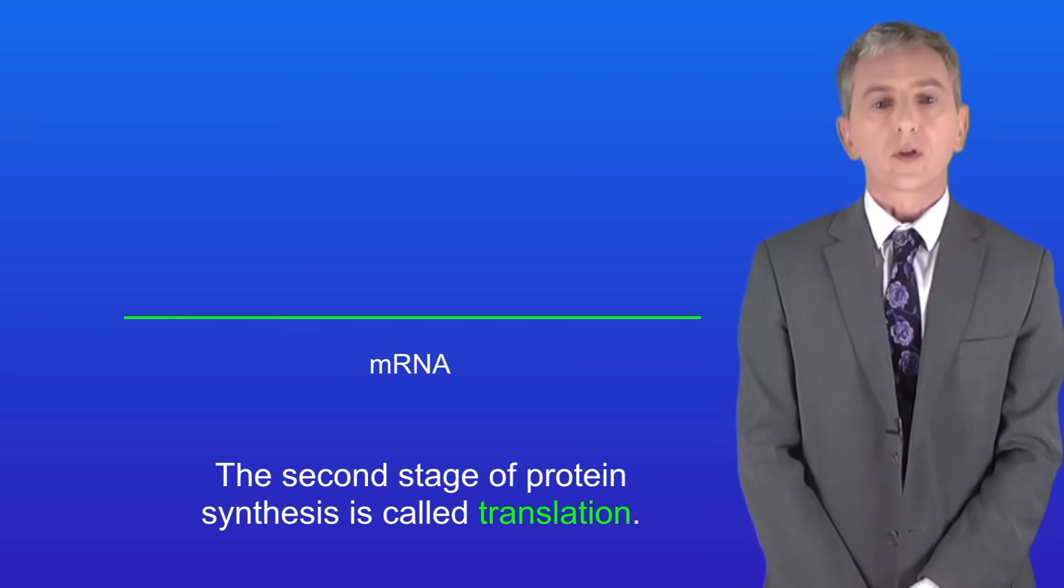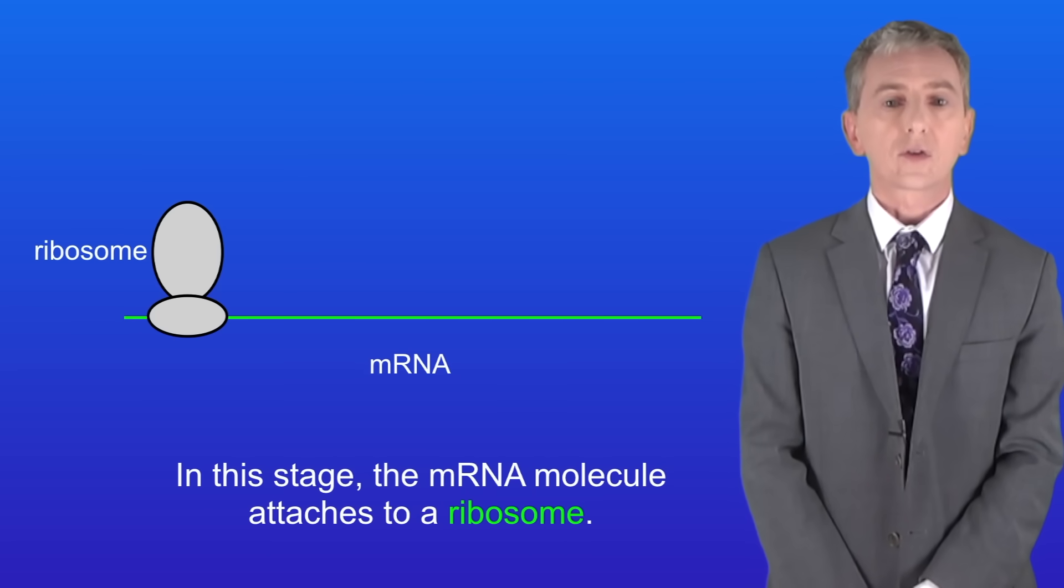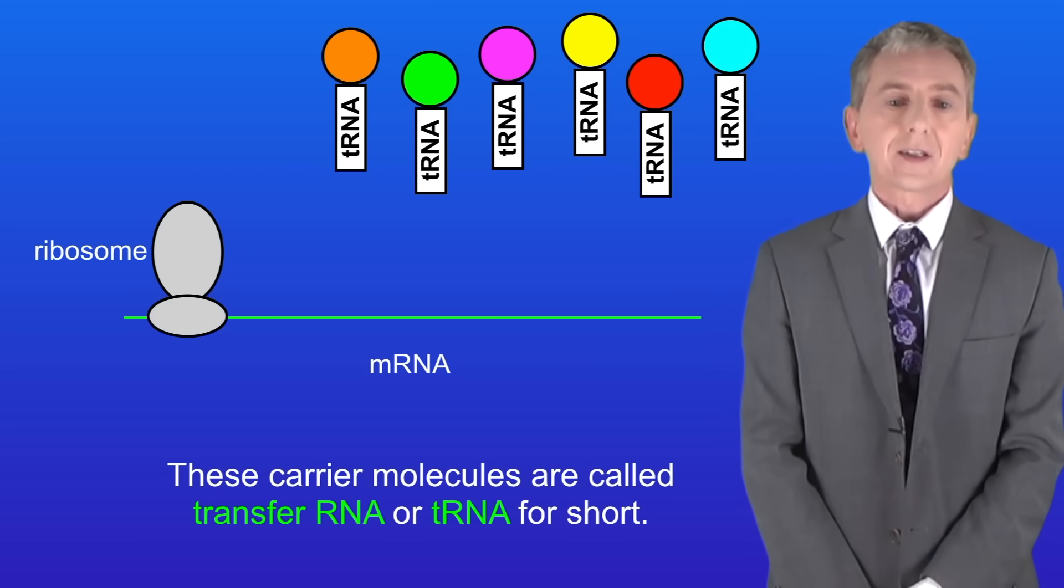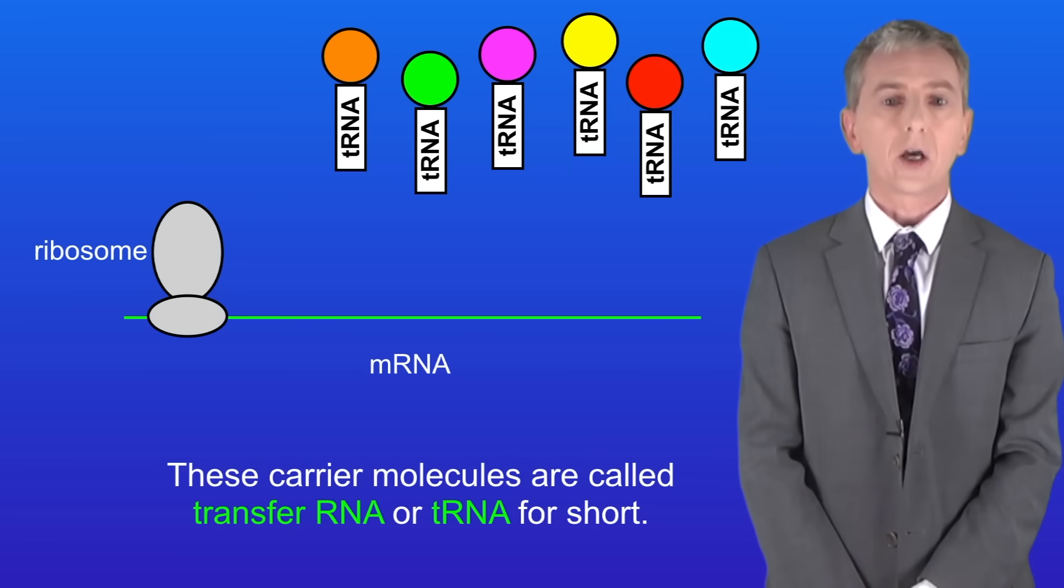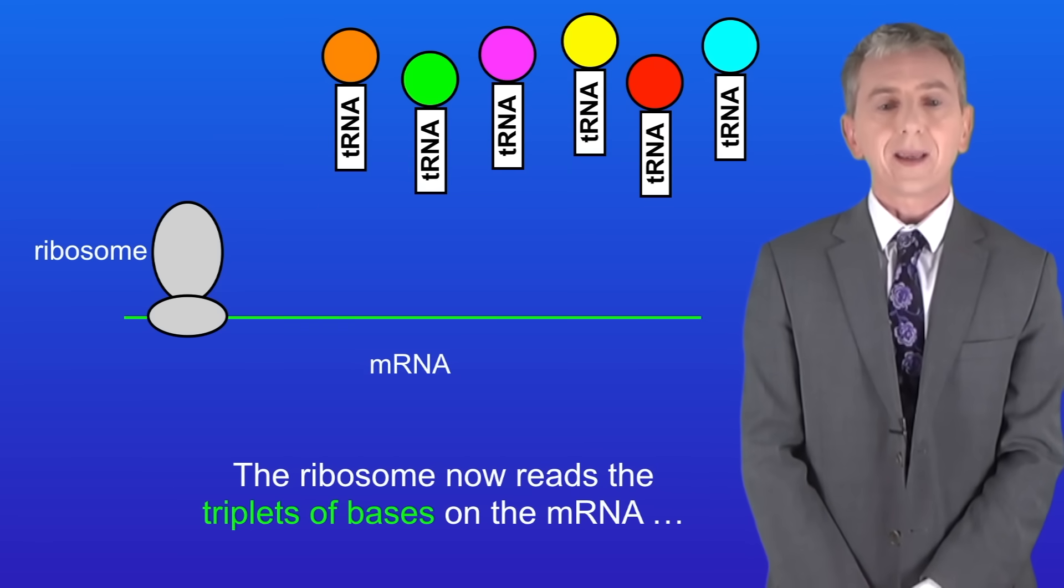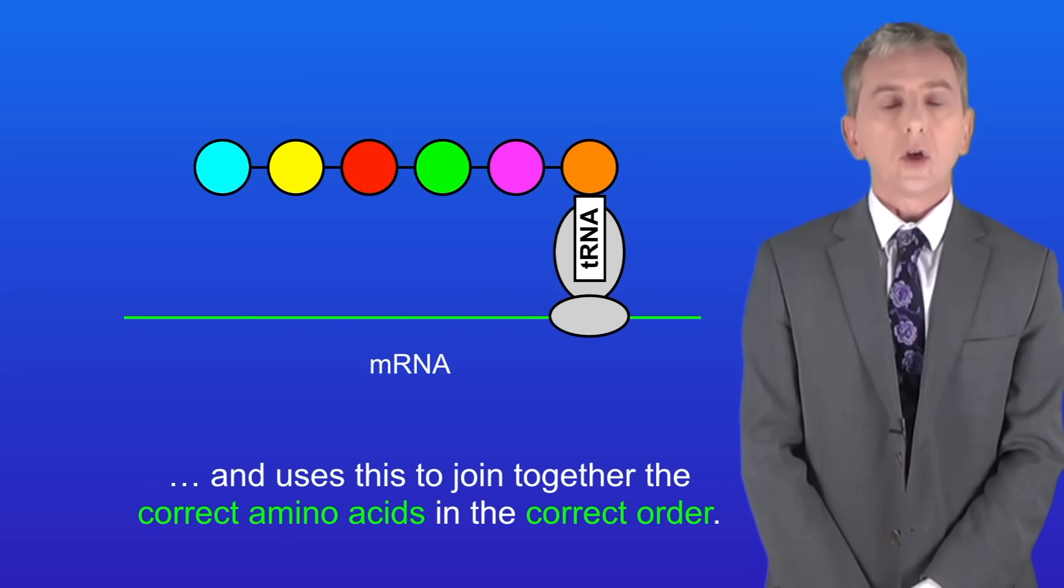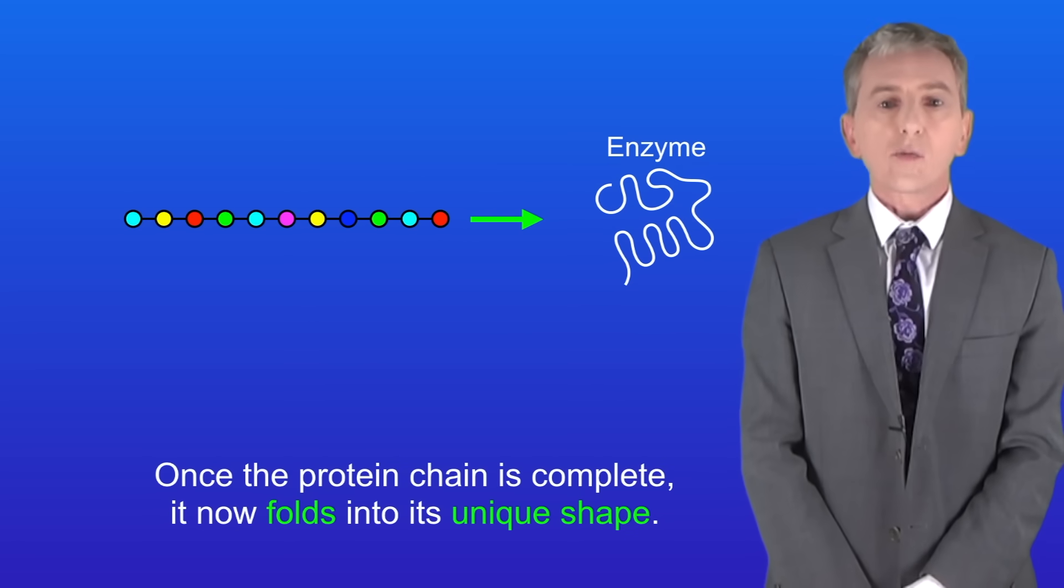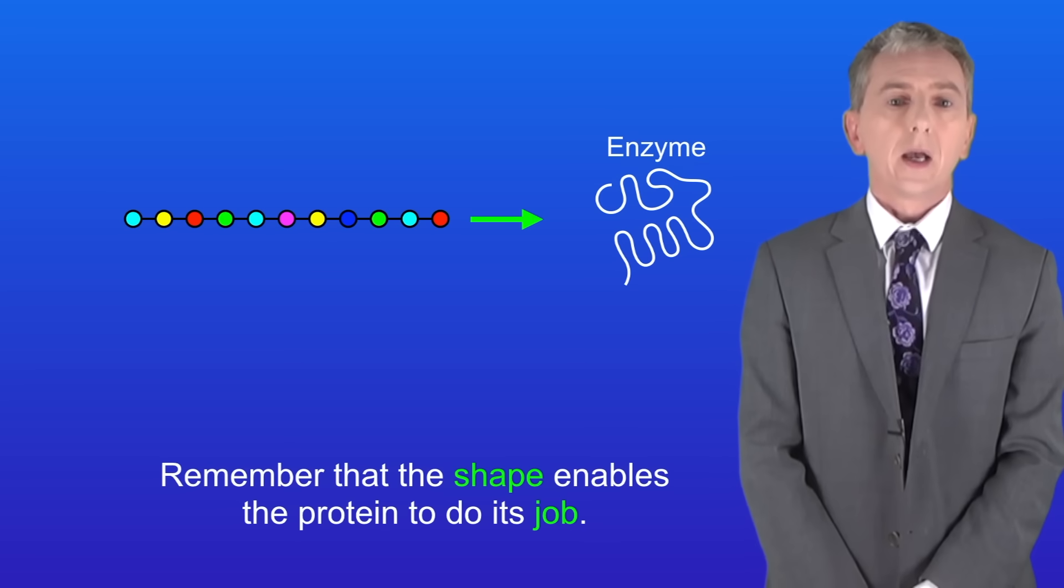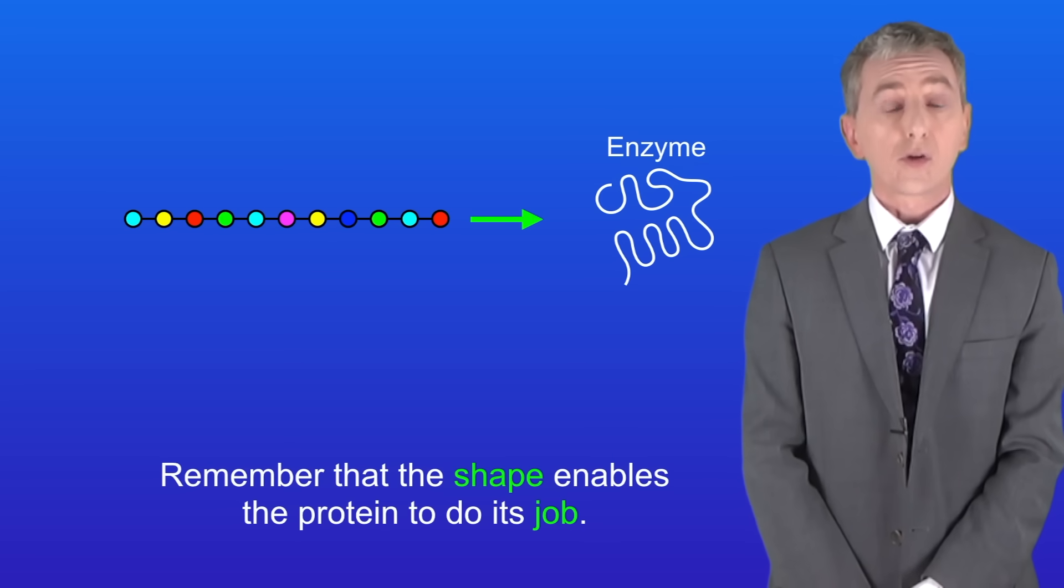The second stage of protein synthesis is called translation. In this stage, the mRNA molecule attaches to a ribosome. Amino acids are now brought to the ribosome on carrier molecules. These carrier molecules are called transfer RNA, or tRNA for short. The ribosome now reads the triplets of bases on the mRNA and uses this to join together the correct amino acids in the correct order. Once the protein chain is complete, it now folds into its unique shape, and remember that the shape enables the protein to do its job.